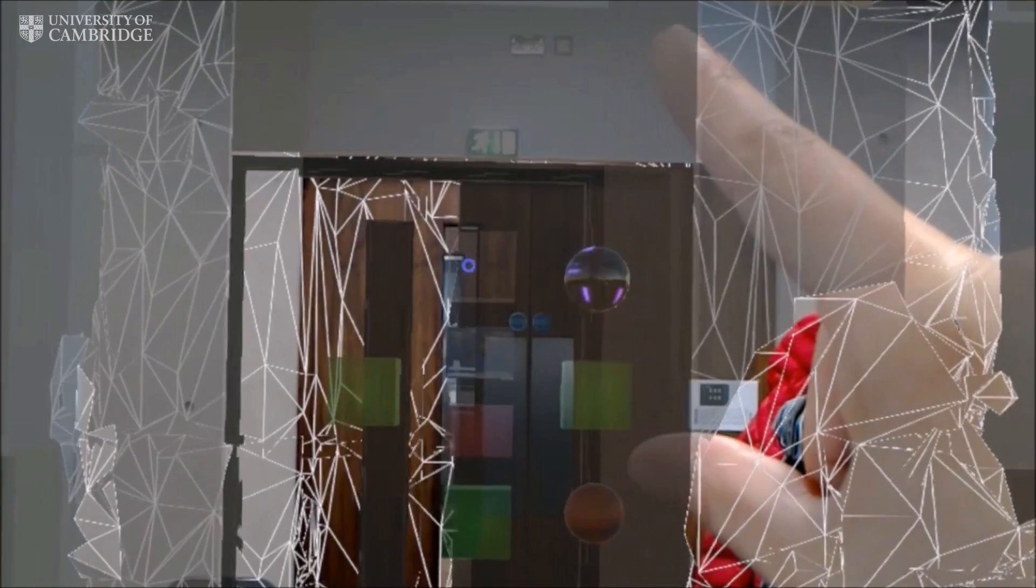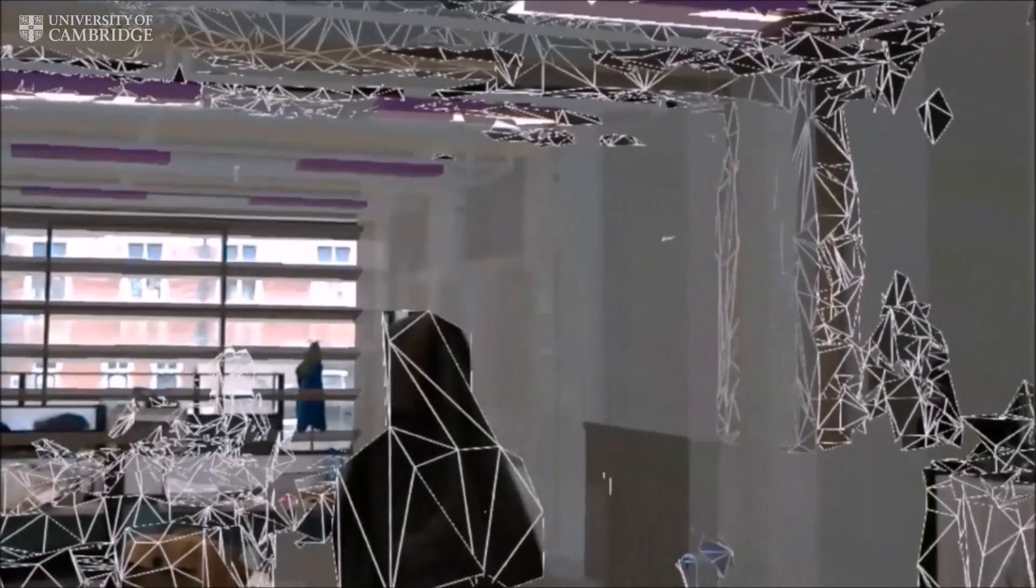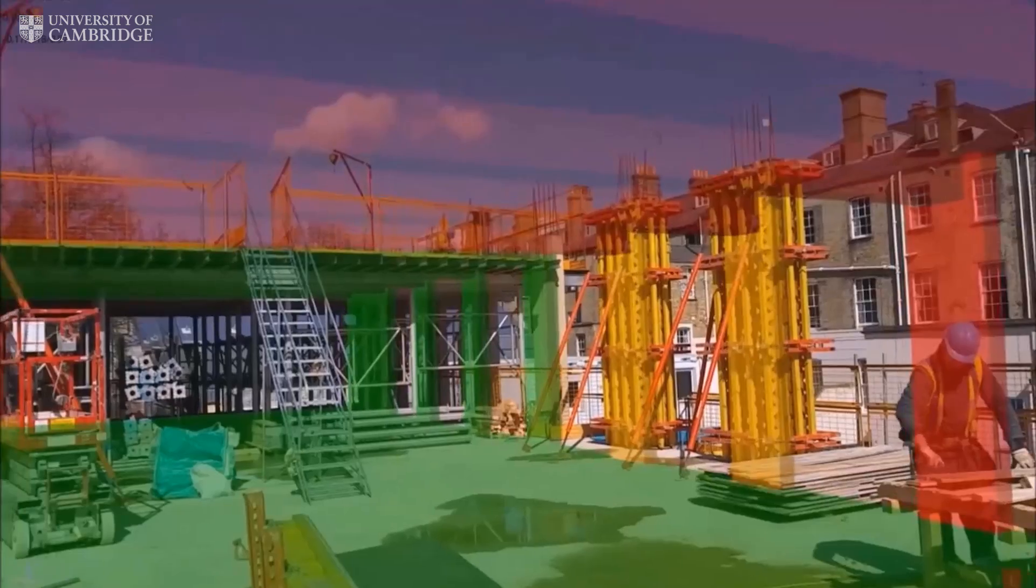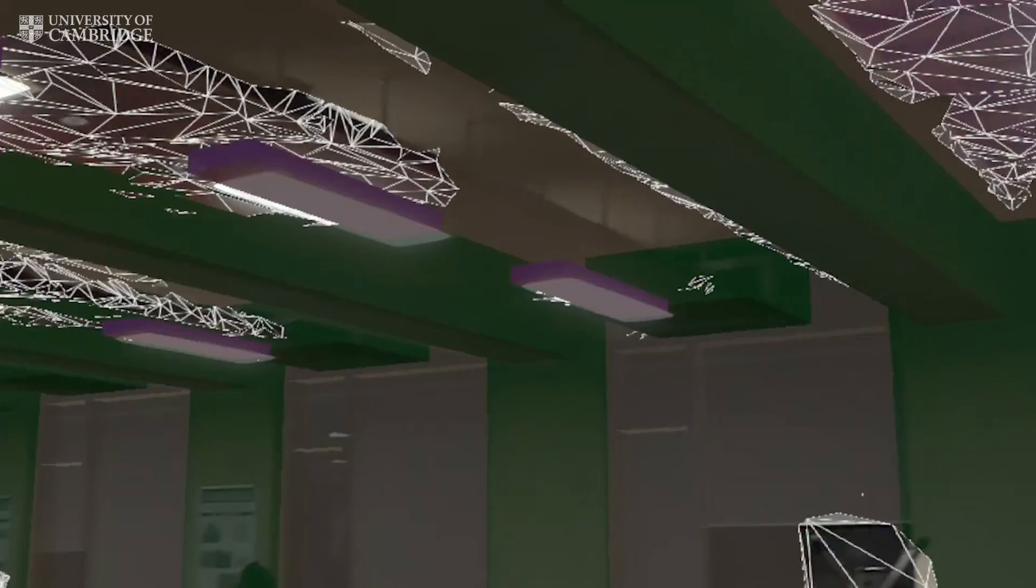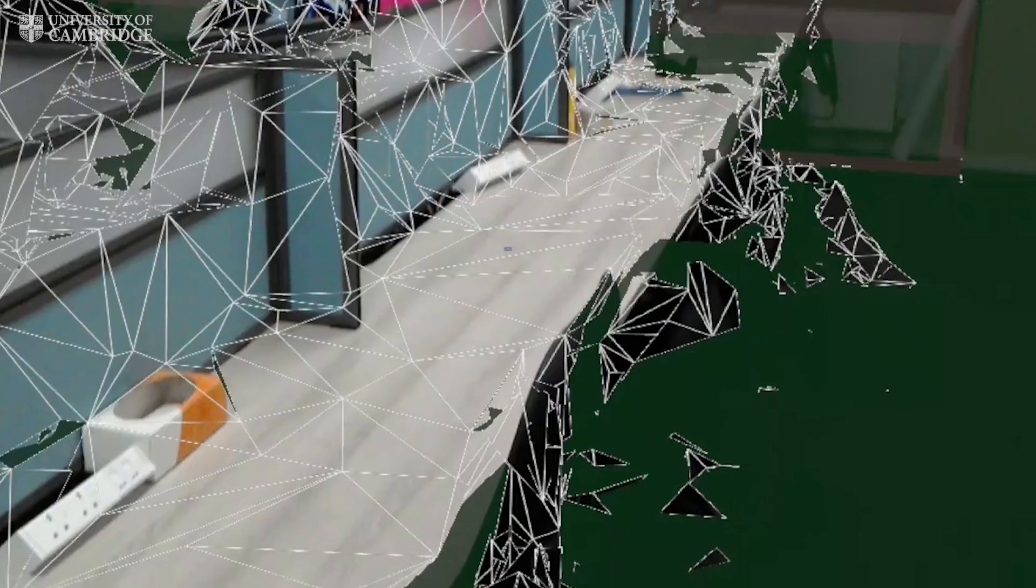Matching the 3D design model with a real building under construction allows us to automate progress monitoring by simply walking around the site. Inspectors can use this to automatically check the construction progress, identify problems and take timely corrective actions.